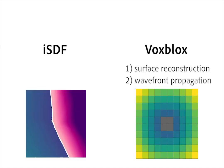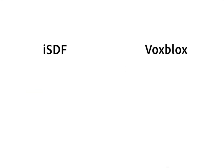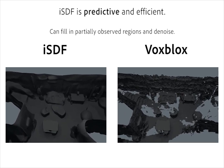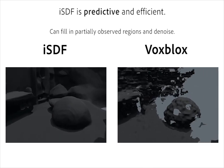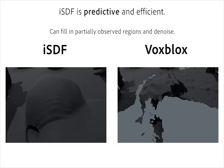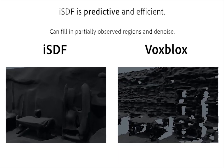In contrast, ISDF is based on a neural signed distance field that is trained in real-time, giving it a number of positive characteristics compared to prior work. A key property of ISDF is that it is predictive. ISDF can sensibly fill in partially observed regions to produce a complete zero level set. Additionally, ISDF is capable of sensibly completing the backsides of objects, such as this bean bag, and denoising many noisy measurements, such as on this wall.